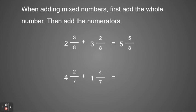If I have four and two sevenths plus one and four sevenths, again I start by adding my whole numbers: one plus four is five. Then I add my numerators: two plus four is six. So I get five and six sevenths.